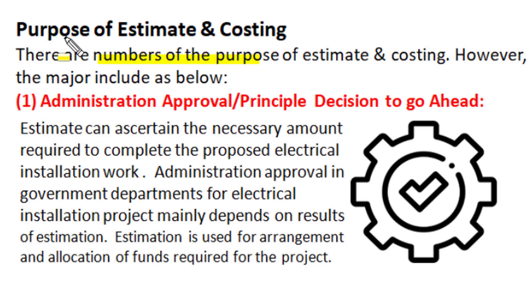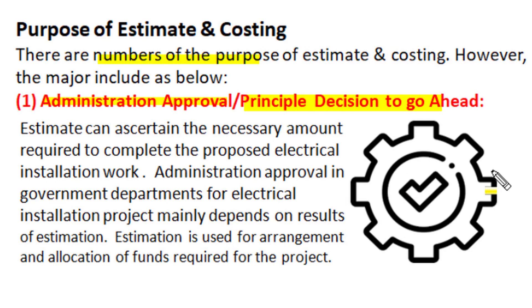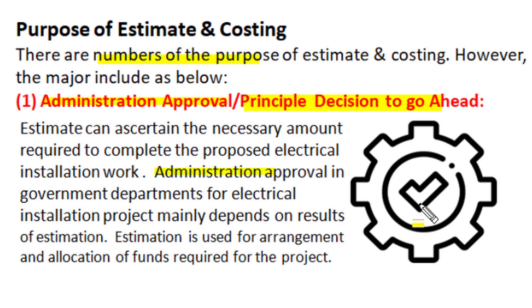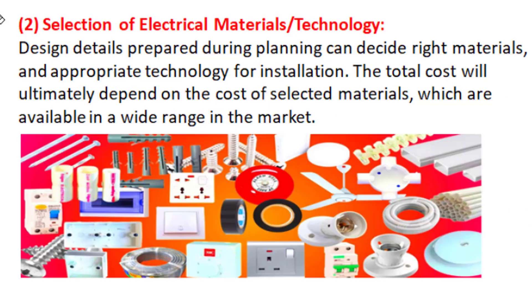There are a number of purposes of electrical estimation and costing. One significant objective is to obtain administrative approval for the project — the principal decision to go ahead on project execution. In an estimate, we ascertain the necessary amount of financial resources required for material and workmanship. In government and organized sectors, administrative approval from top officials is necessary to initiate any electrical installation project, and that approval depends on the results of estimation. Rough estimation results are used for arrangement and allocation of funds, and only after availability of funds and technical sanction can a project be initiated.